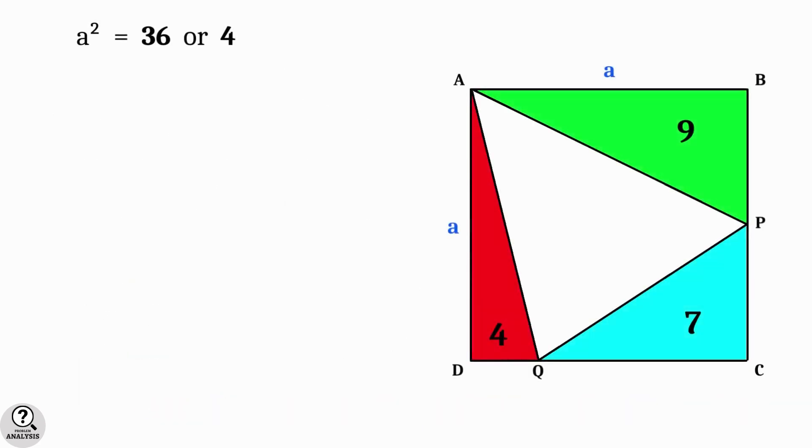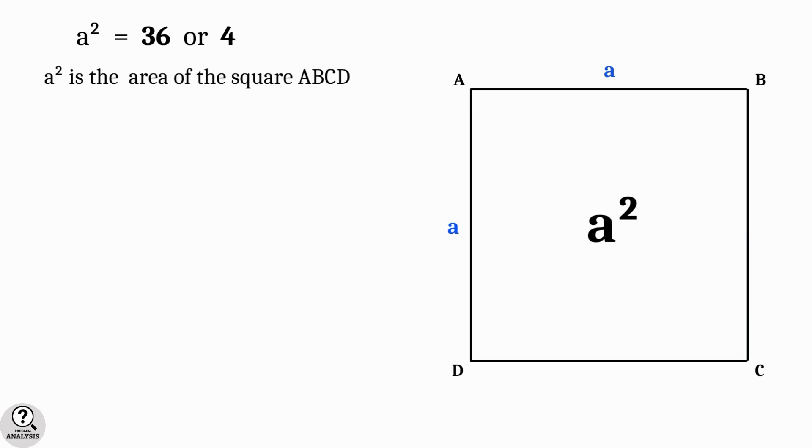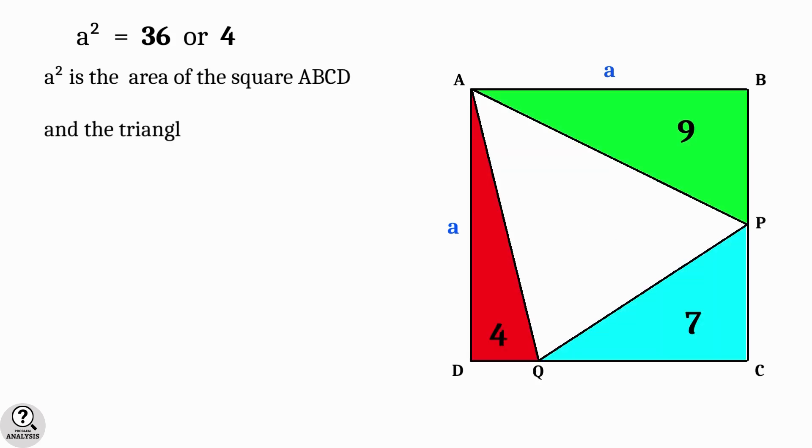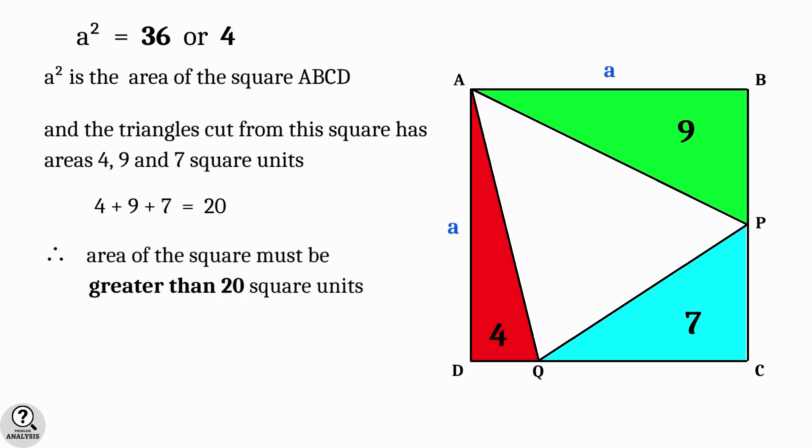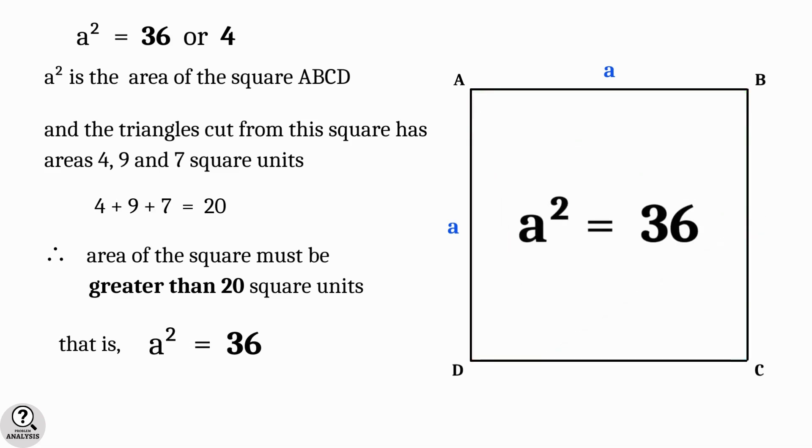Coming back to the actual figure, we know that a² is the area of the square. And the triangles with given area 4, 9 and 7 square units are drawn inside the square. Therefore, area of the square should be at least 4 plus 9 plus 7 equal to 20 square units. Then only possibility is a² equal to 36 square units.